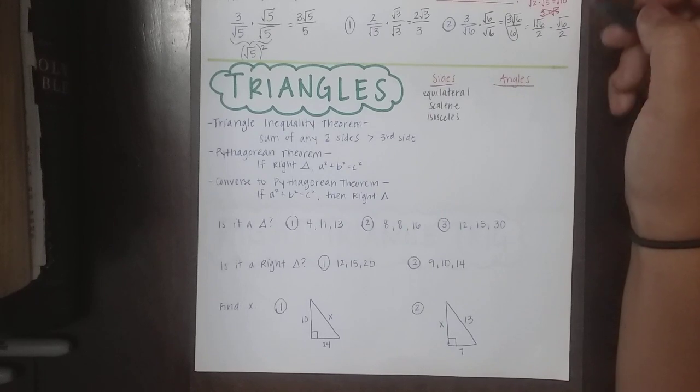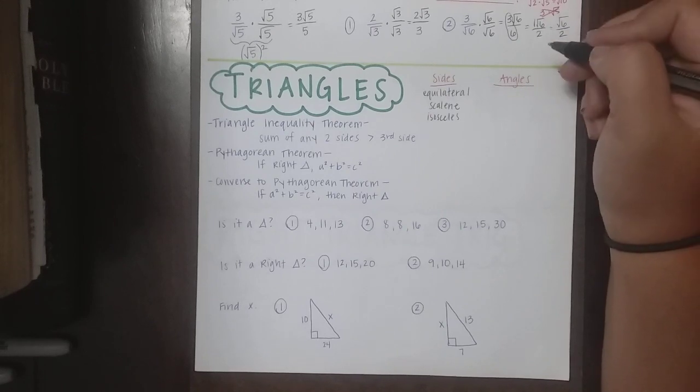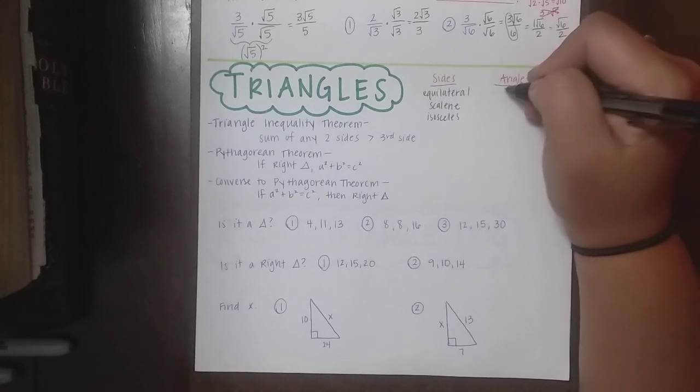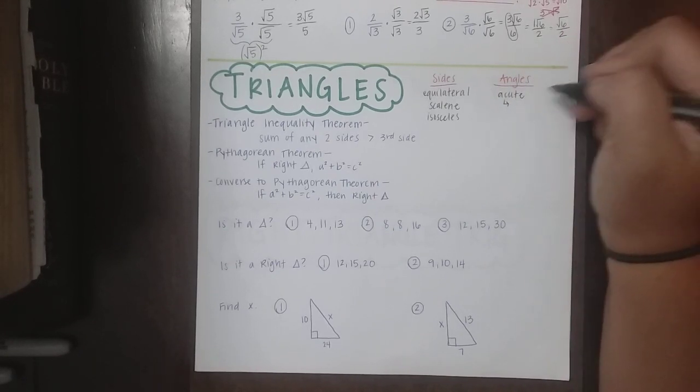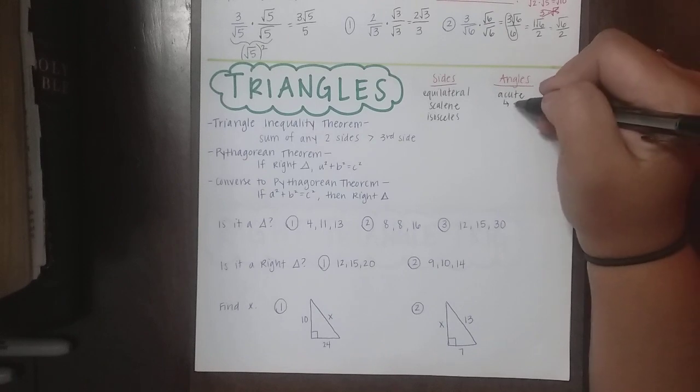And then based on angles, if I have all angles that are less than 90 degrees, that's going to be an acute triangle. And if all of the angles are the same, which would make them 60 degrees, which is also less than 90, we call it equiangular.